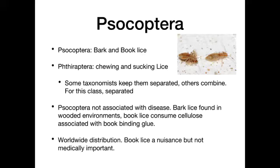Psocoptera are the bark and book lice, and then we have the Phthiraptera, which are the chewing and sucking lice. Some taxonomists keep them together; we're going to separate them because the Psocoptera are not associated with disease. Bark lice are found in woods; book lice like cellulose — the glue used to bind books is often what they feed on. They're found throughout the world but are more of a nuisance in libraries and homes, not medically important.